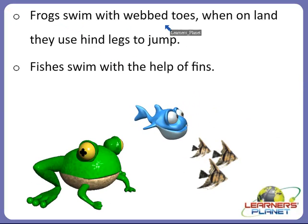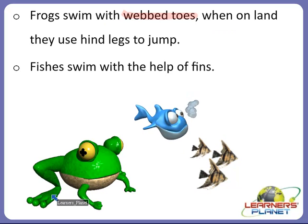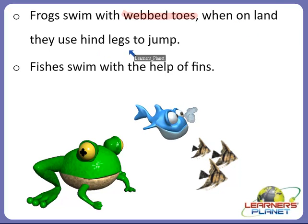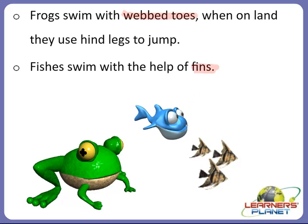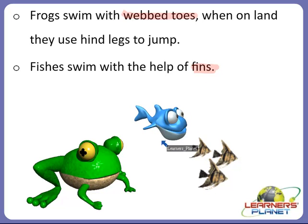Frogs swim with the help of webbed toes — you can see this adaptation in the picture. When on land, frogs use their hind legs or hind limbs to jump. Fishes swim with the help of fins, which are another type of movement organ. Fishes do not have webbed toes or limbs like other animals, so they swim using their fins, as you can see in this picture.